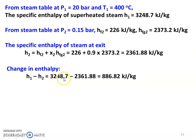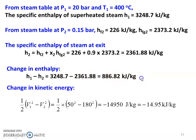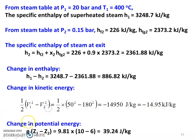Change in enthalpy: H1 minus H2 equals 3248.7 minus 2361.88, equal to 886.82 kilojoules per kilogram. Change in kinetic energy: 1/2 times (V1 squared minus V2 squared) equals 1/2 times (50 squared minus 180 squared), which equals minus 14950 joules per kilogram, or minus 14.95 kilojoules per kilogram. Change in potential energy: g times (Z1 minus Z2) equals 9.81 times (10 minus 6), which equals 39.24 joules per kilogram. So, changes in enthalpy, kinetic energy, and potential energy are calculated.